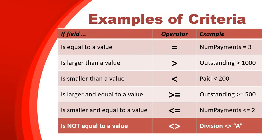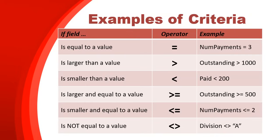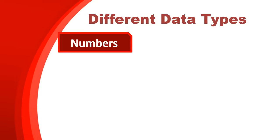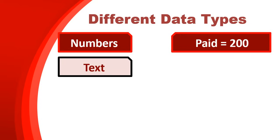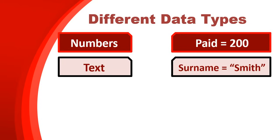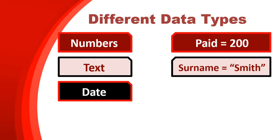If you look at those examples you'll notice that the last one - division - has double quotes around the letter, but all the others don't. That's because different data types need to be referenced in different ways. All the previous examples had number fields - either a currency field or a number field - whereas that last field was a text field. For numbers, you can just leave them as is: equal to 200 or less than 200, no changes needed.